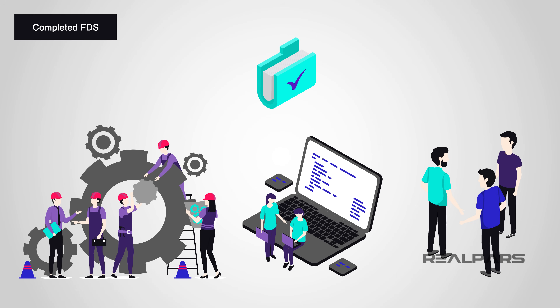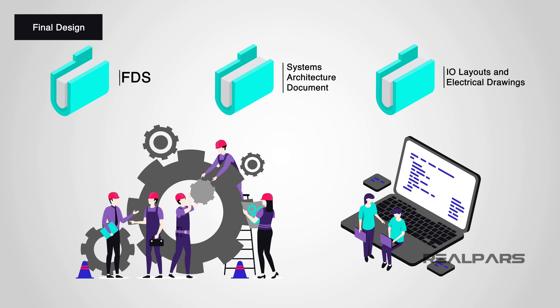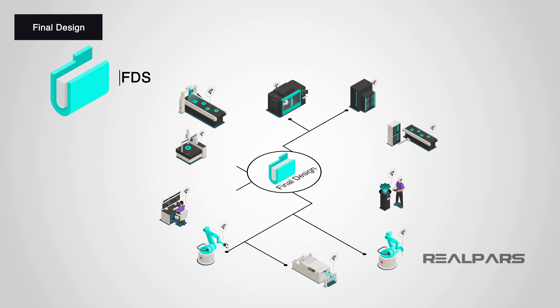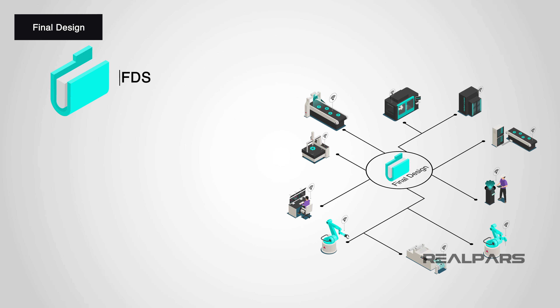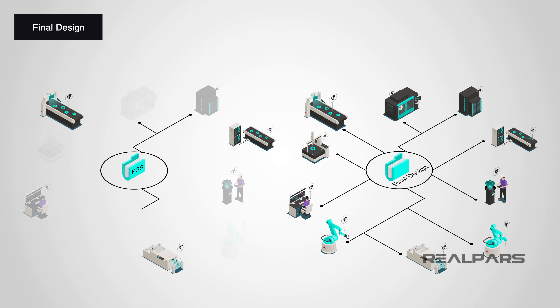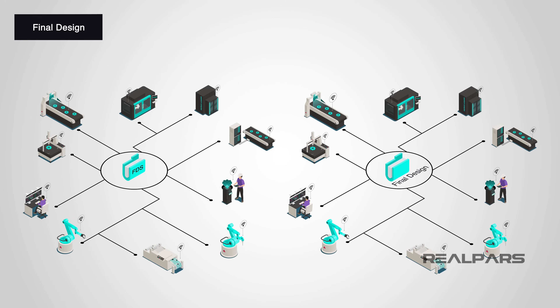In a typical industrial software engineering lifecycle, the Functional Design Specification describes what has to be implemented. The next document after this may be a Systems Architecture document, describing how the functions will be realized using the chosen PLC controller. This in turn will help produce the I/O layouts and electrical drawings. Finally, when the testing phase is performed, the actual behavior of the final system is compared against the expected behavior as defined in the Functional Specification.